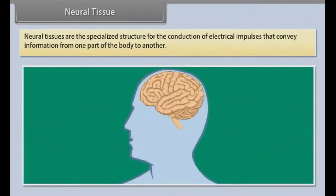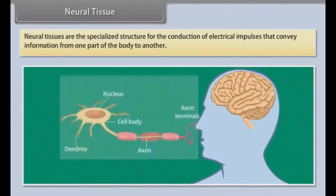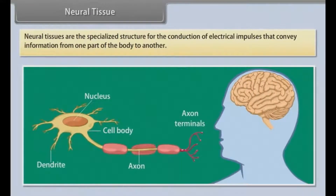Neural tissues are the specialized structures for the conduction of electrical impulses that convey information from one part of the body to another.